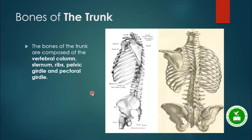Hello students. In the last video we talked about the parts of the human skeleton, which was mainly divided into three parts: the skull, the trunk, and the extremities. We discussed the bones of the skull in the last video, so today we are going to start the bones of the trunk.